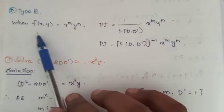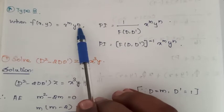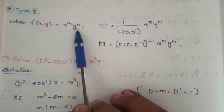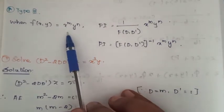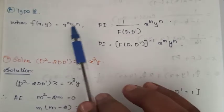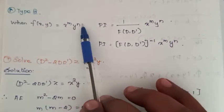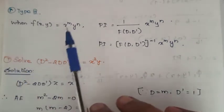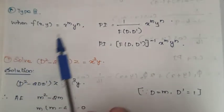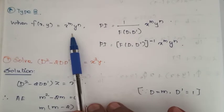When f of x, y is equal to x power m, y power n — that means variable polynomial Type 3 — that means x power sometime, y power sometime. This is the right side equation change, that is Type 3.